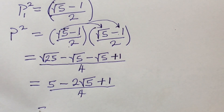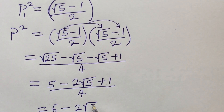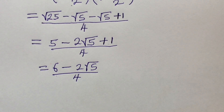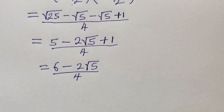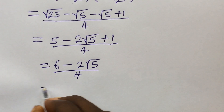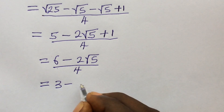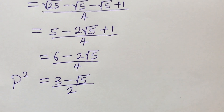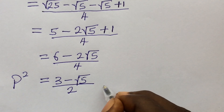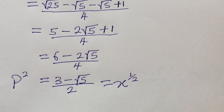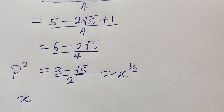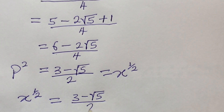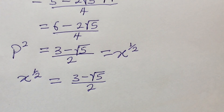Adding 5 and 1 gives 6, so we have 6 minus 2 root 5, all over 4. Since 2 is common to numerator and denominator, we simplify to get 3 minus the square root of 5, all over 2. This is the value of p squared, and since p squared equals x to the power of 1/2, we have x to the power of 1/2 equal to 3 minus the square root of 5, all over 2.